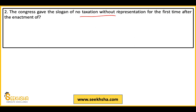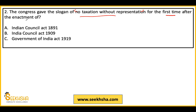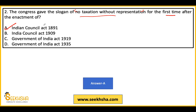The Congress gave the slogan 'No Taxation Without Representation.' Which enactment prompted Congress to give this slogan for the first time? Option A: Indian Council Act 1891. Option B: Indian Council Act 1909. Option C: Government of India Act 1919. Option D: Government of India Act 1935. This is an example of a direct factual question. The answer is the Indian Council Act of 1891 — in response to this, Congress said 'No Taxation Without Representation.'